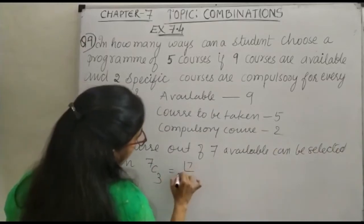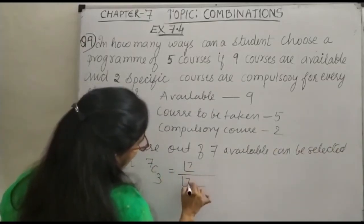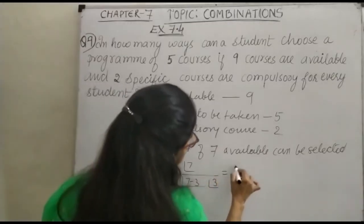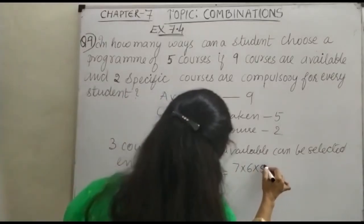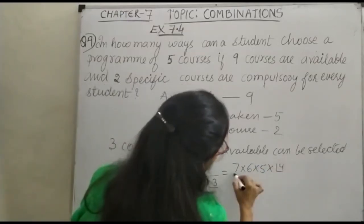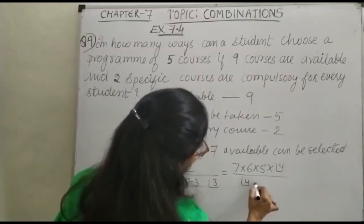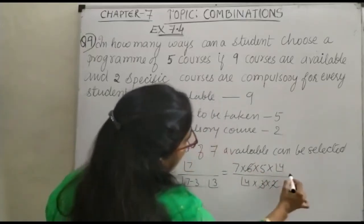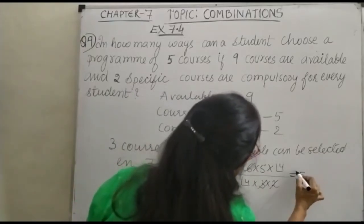So this takes the form 7 factorial, 7 minus 3 and here 3. So this will be 7 into 6 into 5 into 4 factorial which will be cancelled with this 4. We are here with 3 into 2. So you can see here 6 will be cancelled and we are here with 35.